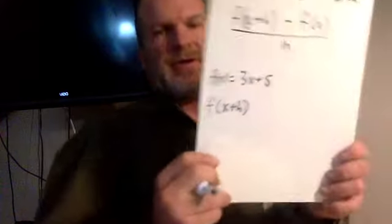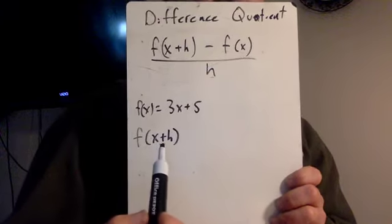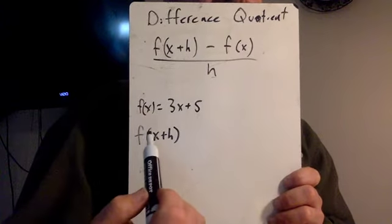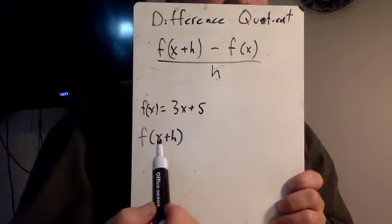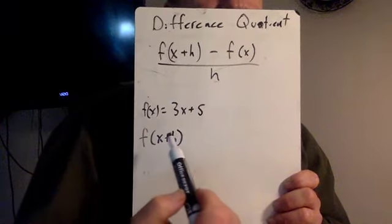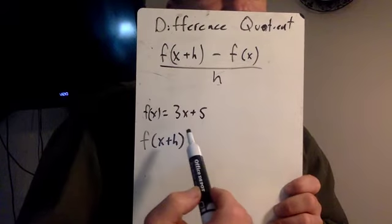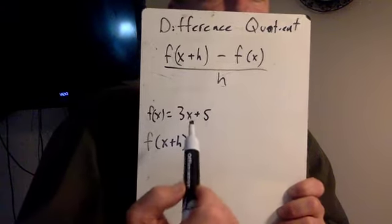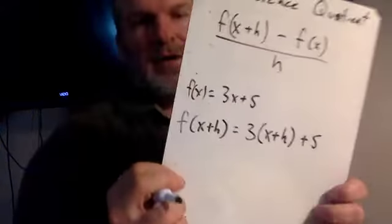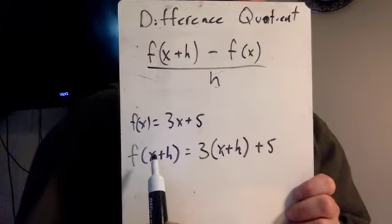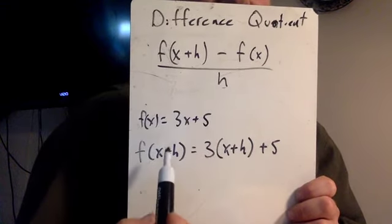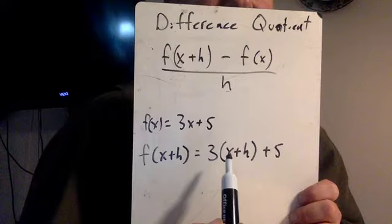What's more complicated is if you do f of x plus h. So f of x plus h, not x of h, x plus h. It's still the same concept. If that was just a 4, we'd put a 4 in for x. But now it's all this, and we've got to put all that in for x. So it becomes 3 times x plus h plus 5. So just like f of 4 on the last one became 3 times 4, now f of x plus h becomes 3 times x plus h.